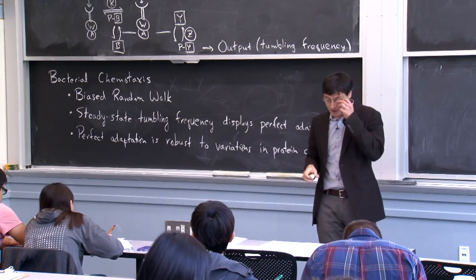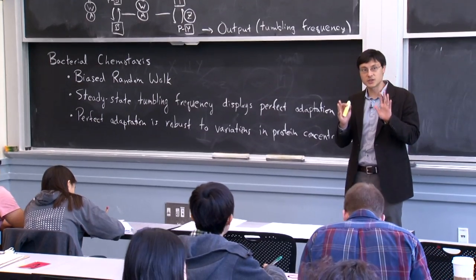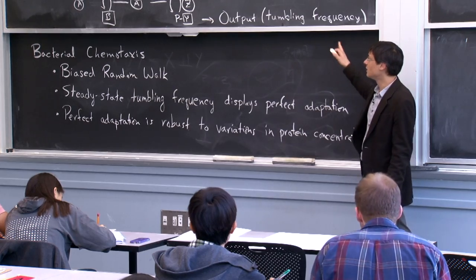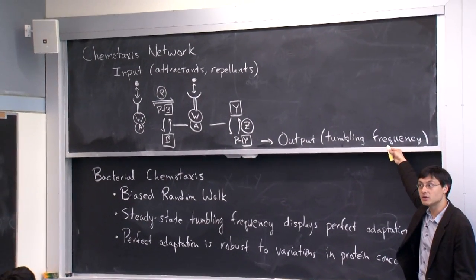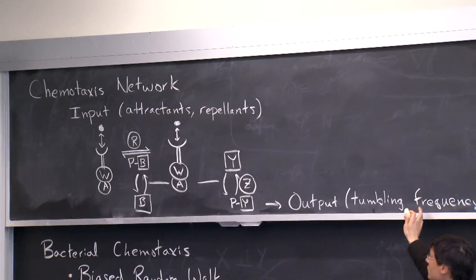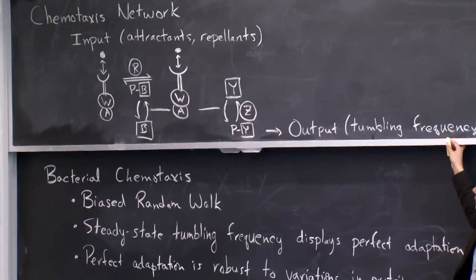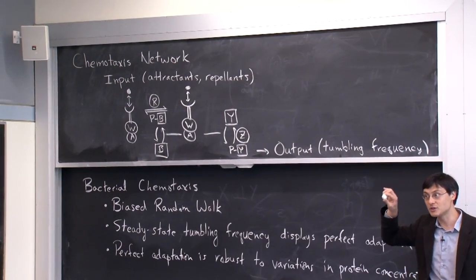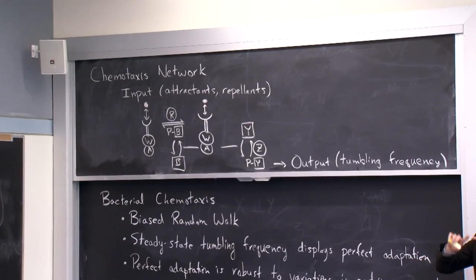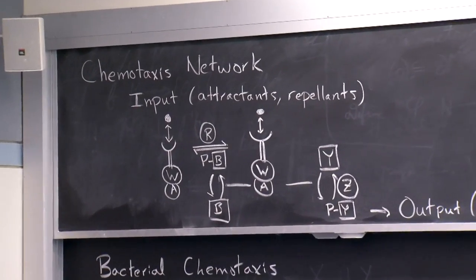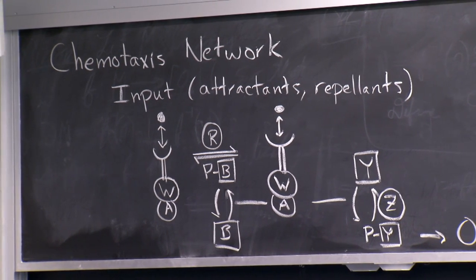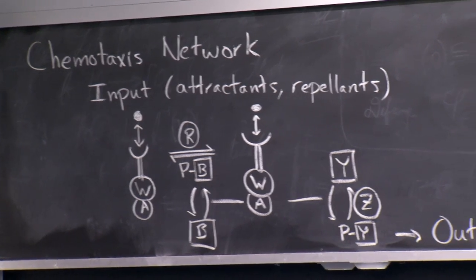Our goal today is to make sure we understand the challenge that E. coli are facing, and then to understand the genetic circuit they use to overcome this challenge. For the next hour and 15 minutes, we'll leave the network up on the board so that any time you're confused about what CheR, CheB, CheZ, CheY, and so forth are, you can look up and remind yourself. Hopefully the reading from last night will help you follow along — there are a fair number of letters, I'll admit.